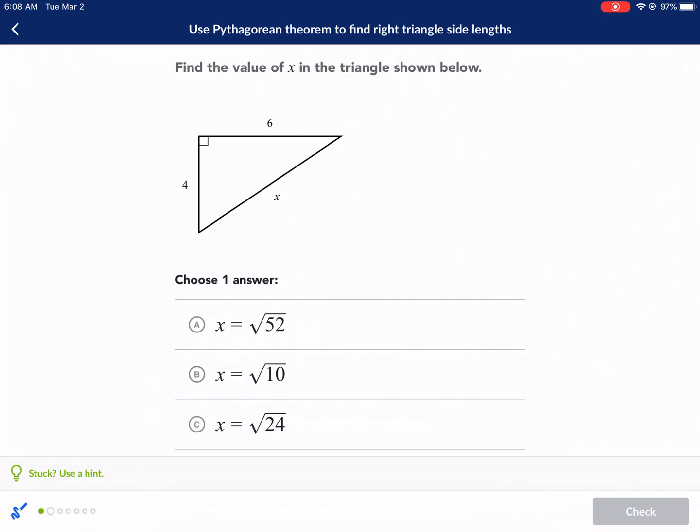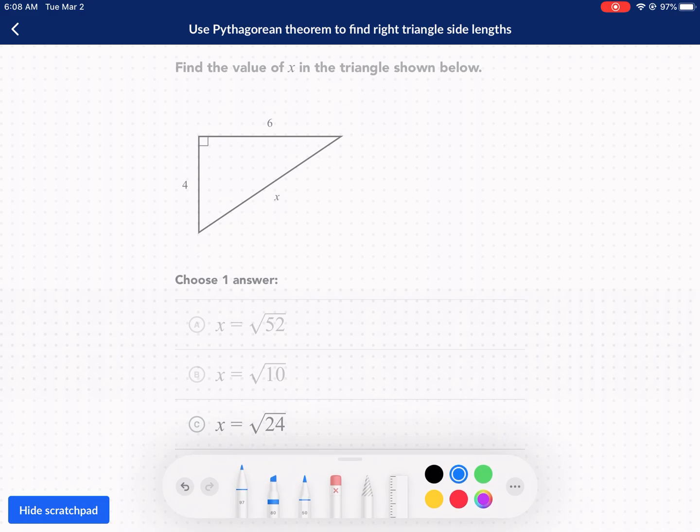Next question. This time we're given the two legs. It's very important to identify the hypotenuse in every one of these. So in this case, this is our hypotenuse because it's opposite a 90-degree angle. Here's our two legs. So in this case, we're going to do 6 squared plus 4 squared, and that's going to be equal to x squared.